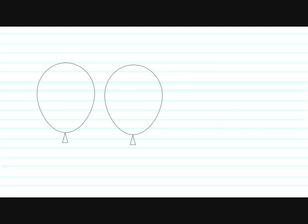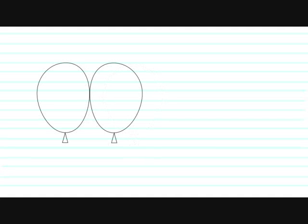Now suppose you have two balloons, and you try to squish them together. The outer edge prevents this from happening. The same is true for atoms — the electron shells repel each other and keep the atoms from squishing together.